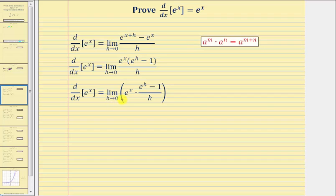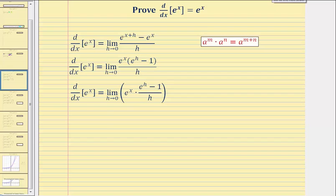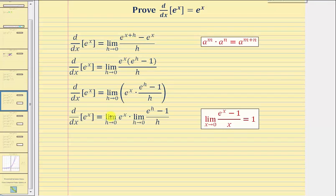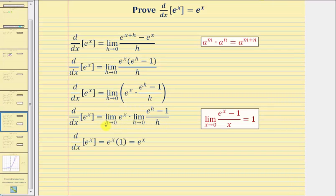Because we have a limit of a product, we can write this as a product of limits. So we have the limit as h approaches zero of e to the x, times the limit as h approaches zero of e to the h minus one divided by h. In this form we can evaluate both limits. The limit as h approaches zero of e to the x is just equal to e to the x, because e to the x is not affected as h approaches zero.